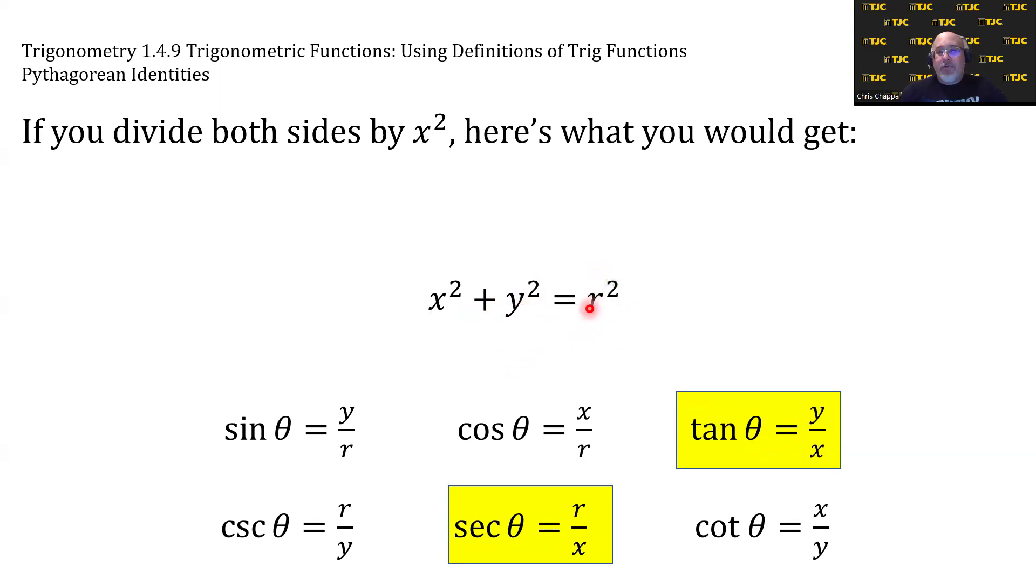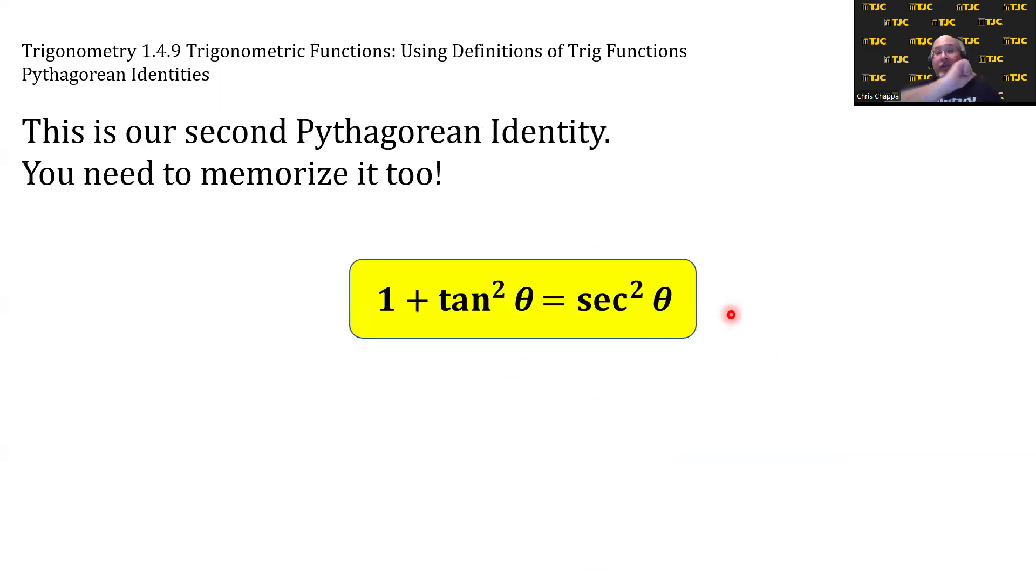And the third variable on the right side of the equation, r², will become r²/x². r/x is the definition of secant. So the right side will become secant squared. And it will look like this: 1 + tan²θ = sec²θ. And there's our second Pythagorean identity. You need to memorize this one too.